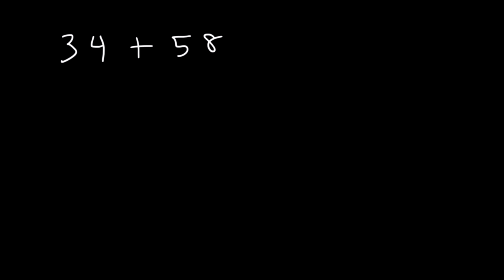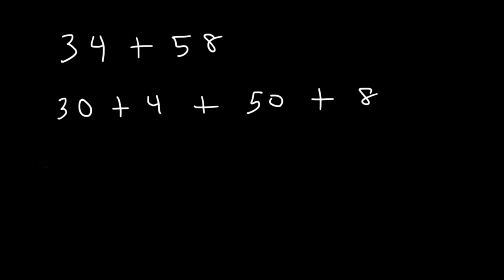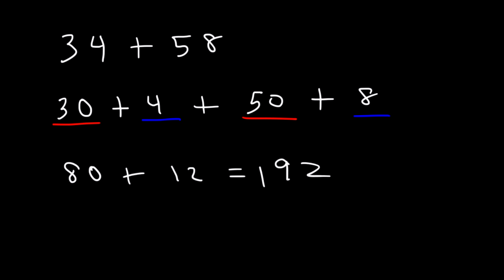What I like to do is break down the numbers into smaller parts. 34 is basically 30 plus 4, and 58 is 50 plus 8. Now it's straightforward to add 30 and 50 — you know that 3 plus 5 is 8, so 30 and 50 adds up to 80. And then 4 plus 8 is 12. 80 plus 12 is 92. That's a simple way to add two numbers.